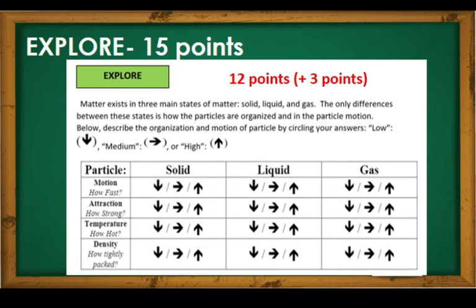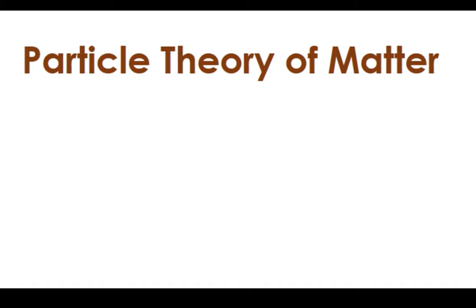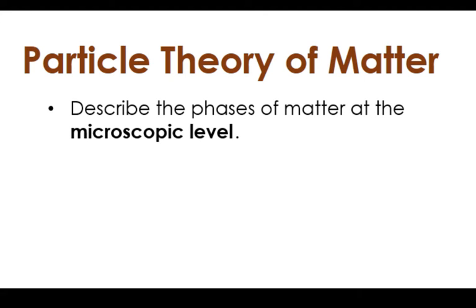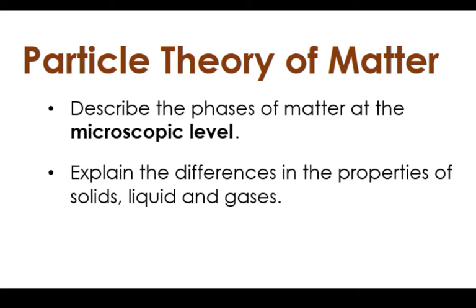Matter exists in three main states of matter: solid, liquid, and gas. The only difference between the three is on how the particles are organized and the motion of the particle. In this activity, you are given the task to describe the organization and motion of particles by circling downward if it is low, the right arrow if it is medium, and the upward arrow if it is high. The particle theory of matter describes the phases of matter at the microscopic level. It also explains the differences in the properties of solids, liquids, and gases.